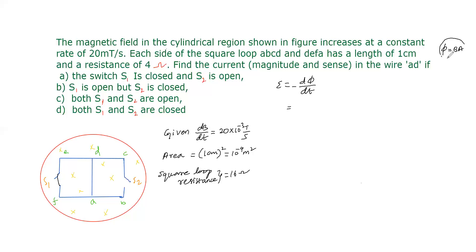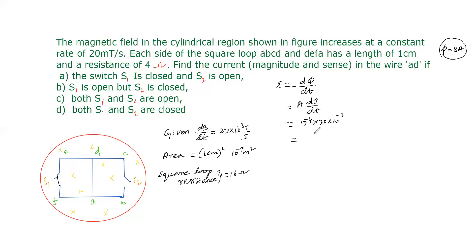So EMF equals area times dB/dt, where area is 10⁻⁴ meter squared and dB/dt is 20 × 10⁻³ tesla per second. Multiplying these together gives us the EMF in volts, which equals 20 × 10⁻⁷ volt.